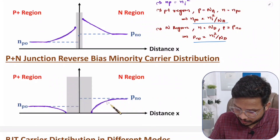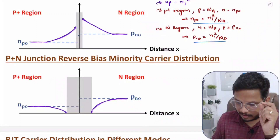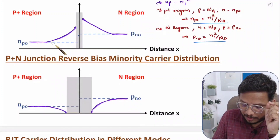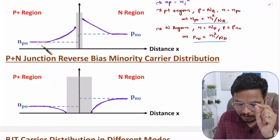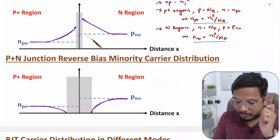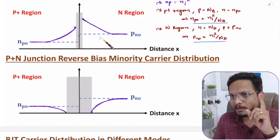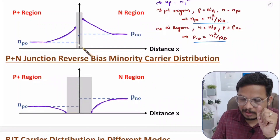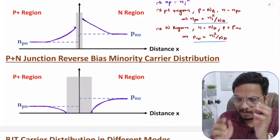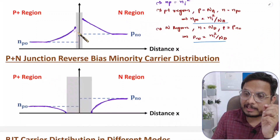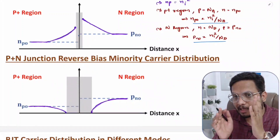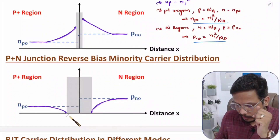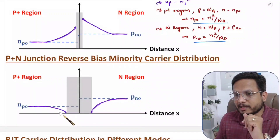So here are two things to understand. First, the equilibrium value depends on doping concentration — P-plus has lower minority concentration, N region has higher minority concentration. Second, in forward bias, the depletion region width decreases and minority concentration increases nearer to the junction. In reverse bias, the depletion width increases and minority concentration decreases nearer to the junction.